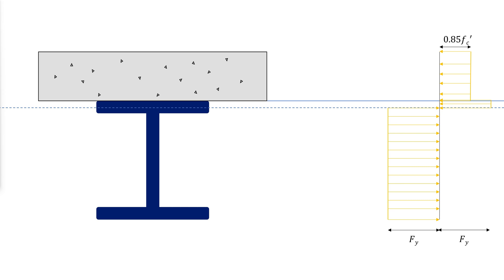Part of the flange will therefore be in compression to augment the compressive force in the slab. The third possibility is with the neutral axis in the web.